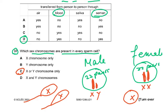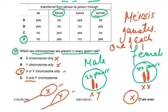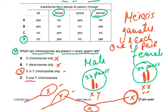X chromosome only is wrong because you can also have Y. Y chromosome only is also wrong. X and Y together is wrong because meiosis produces gametes with only one of each pair of chromosomes. In females, the ovum always carries one X chromosome. In males, sperms carry either X or Y. If a Y sperm fertilizes the ovum, the zygote is XY (male); if an X sperm fertilizes it, the zygote is XX (female).